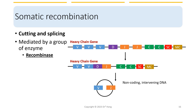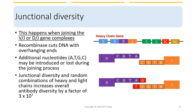The second mechanism that can introduce diversity is called junctional diversity. This happens when joining the V-J or D-J gene complexes. When recombinase cuts DNA with overhanging ends, additional nucleotides such as A, T, G, or C may be introduced or lost during the joining process between the gene complexes. This generates more variety at the junction of the gene complexes — that is junctional diversity. Junctional diversity and random combinations of heavy and light chains increase overall antibody diversity by a factor of 3 times 10 to the 7th — that is a lot.